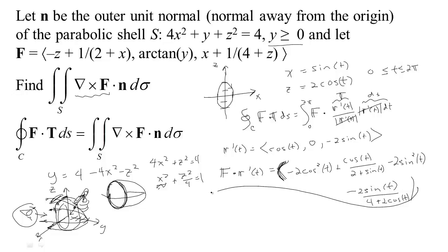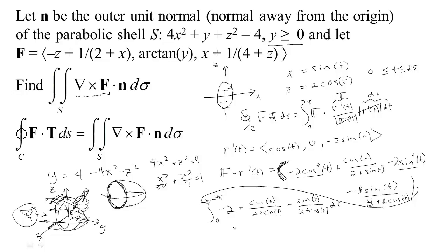This simplifies nicely. We have −2 cos²t and −2 sin²t, which combine to −2. Pulling out a factor of 2 from the denominator terms, the 2 cancels, leaving: f · r'(t) = −2 + cos t/(2 + sin t) − sin t/(2 + cos t). All those integrals can be done — not too bad actually. So we just integrate that from 0 to 2π with respect to t.